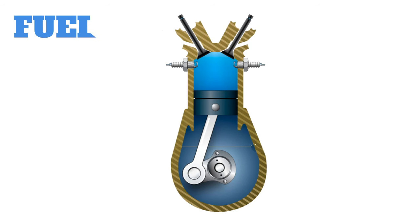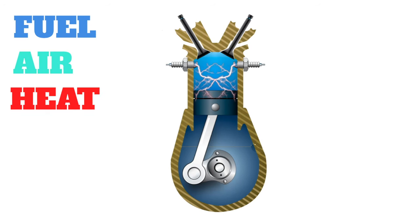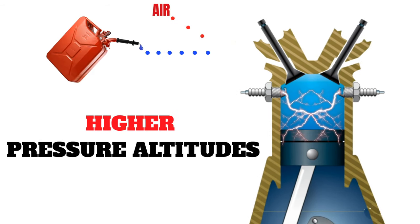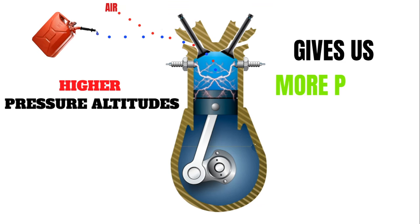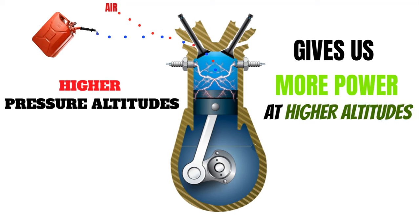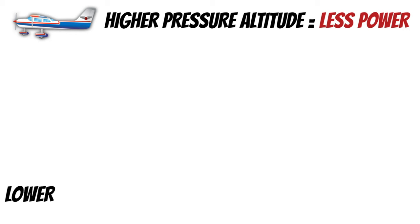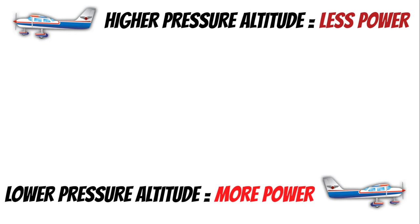There are actually a few reasons. First, in order to create power, your engine needs fuel, air, and a spark or heat. As we climb to higher pressure altitudes, there's less air to mix with the fuel to create power. We can lean out the fuel as we climb, which gives us a good fuel-to-air ratio and the most power possible. But the more air we have, the more power we can produce. That's why some engines have turbochargers or superchargers — those devices introduce more air into the engine. We can produce more power at lower pressure altitudes where there are more air molecules.